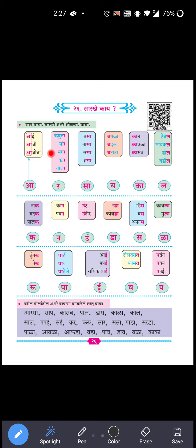Next group: Kabuter, Mor, Magar, Kar, Gazar. In all these words, 'ra' appears at the end. So the similar sound is 'ra'. Next: Basa, Masa, Sasa, Hasa - at the end of all words, 'sa' appears. So the similar part is 'sa'.